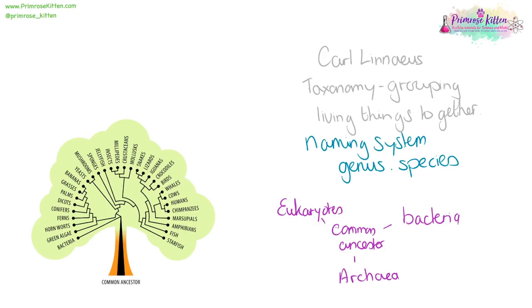The three domain system divides everything in life into three groups: eukaryotes, bacteria, and archaea. Eukaryotes are things that have nuclei.